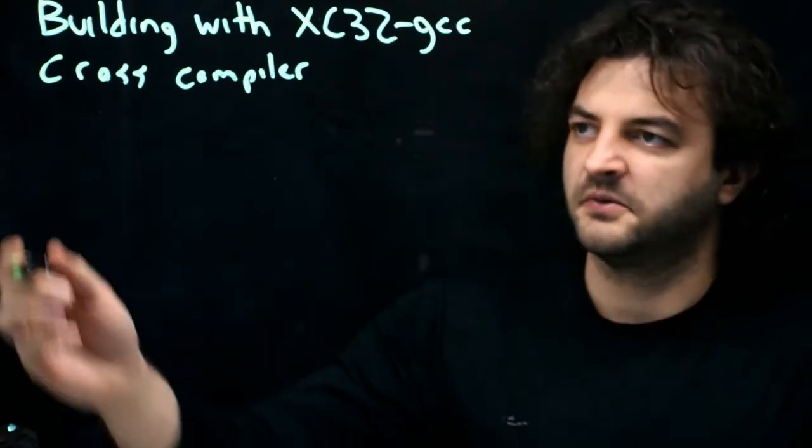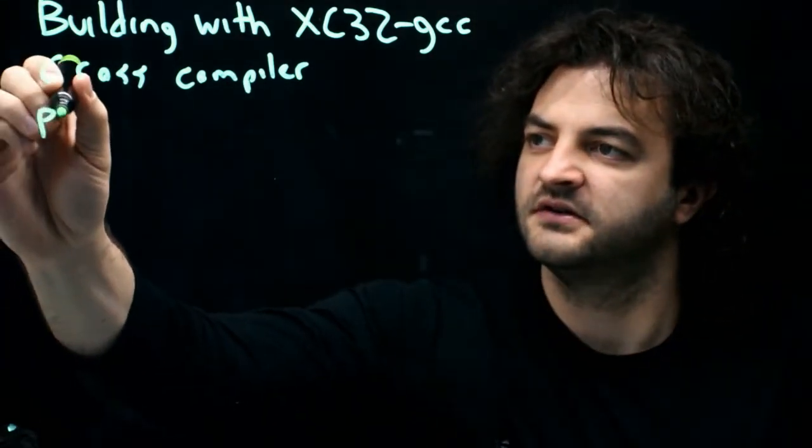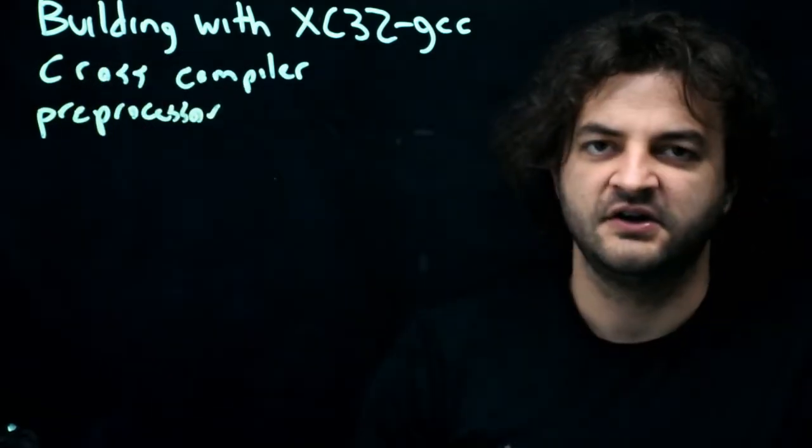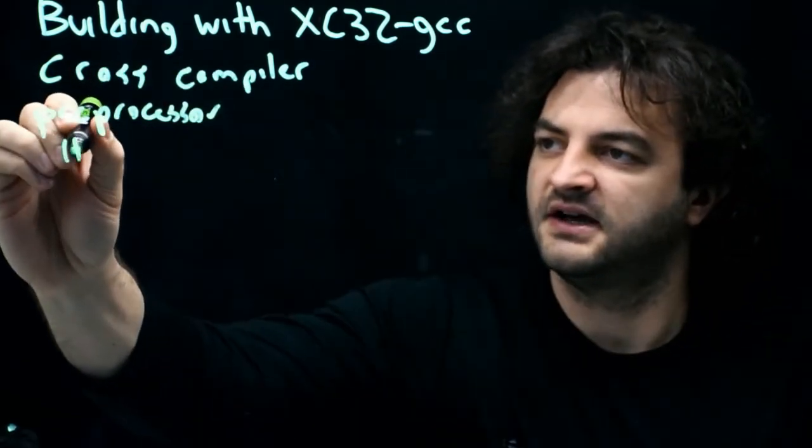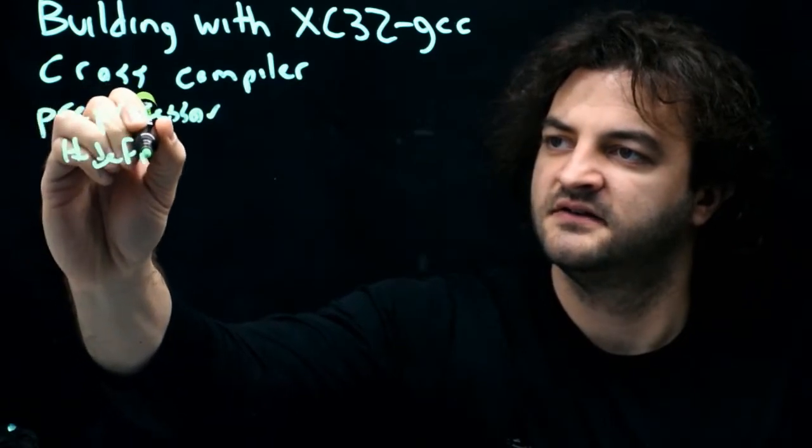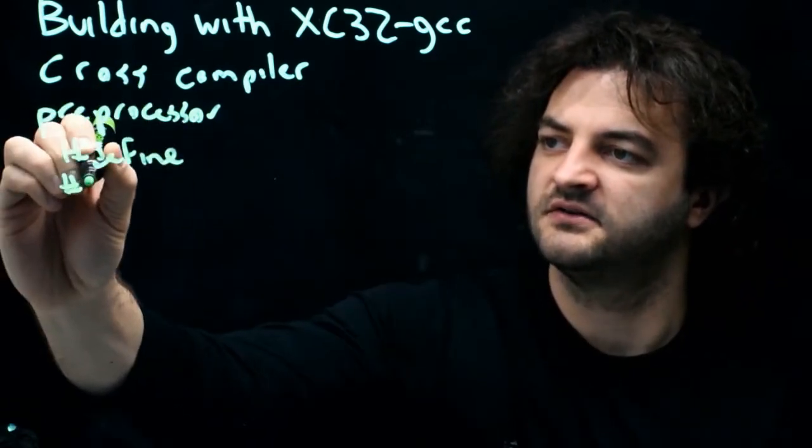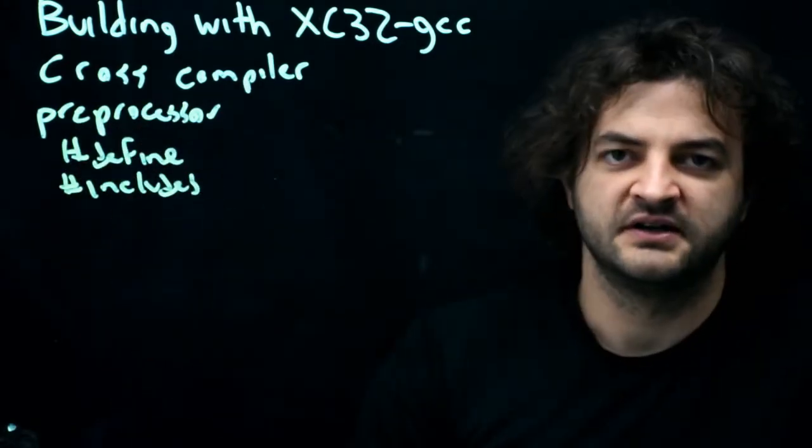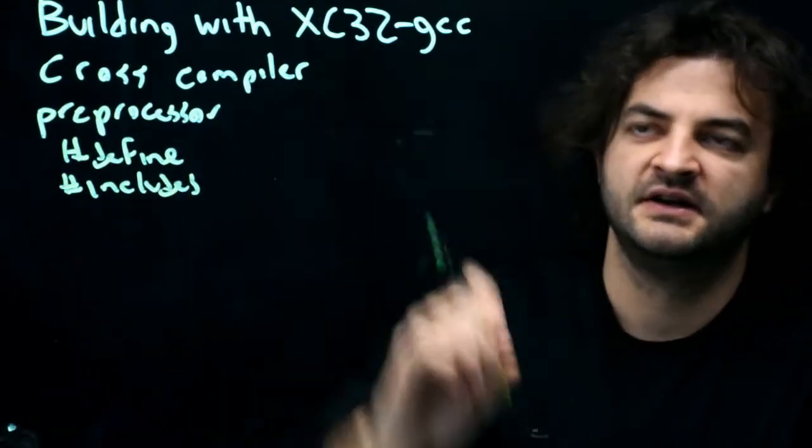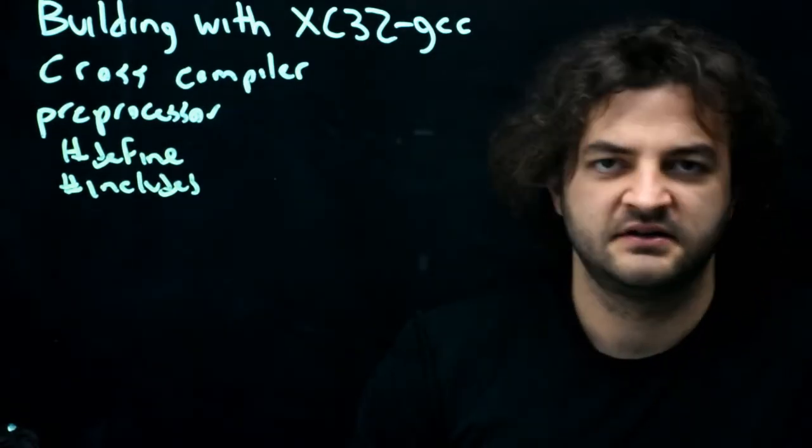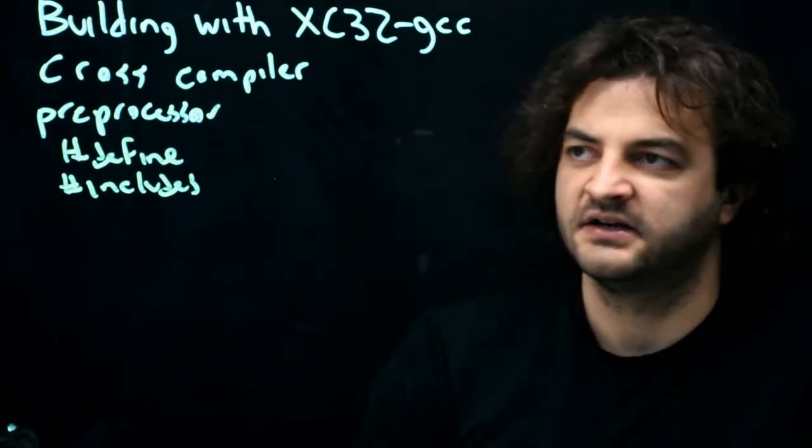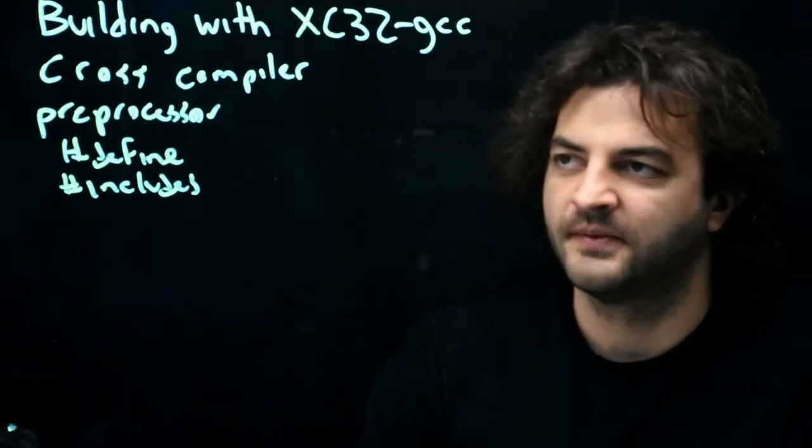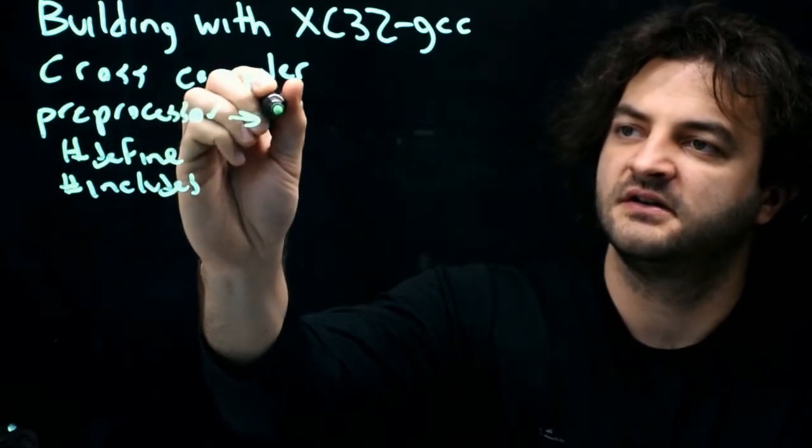The steps look very similar to what we saw before. We have our preprocessor. So we take our C code and we evaluate the pound defines and the pound includes. So taking the libraries that we've written and taking the libraries that have come with all the other XC32 code that Microchip has provided, reshuffling them around, deleting the comments, formatting. And that gets passed to the compiler.